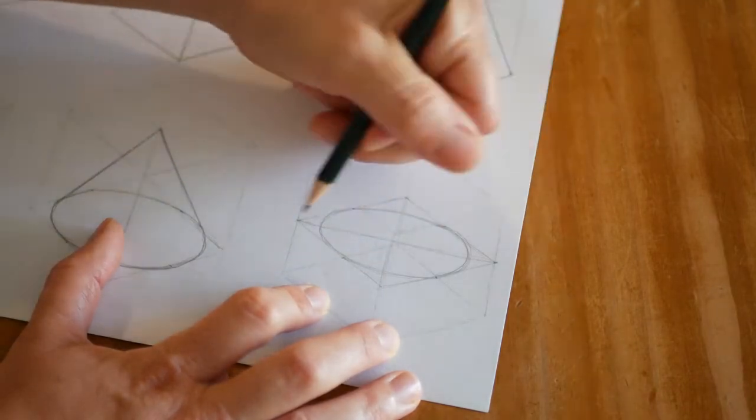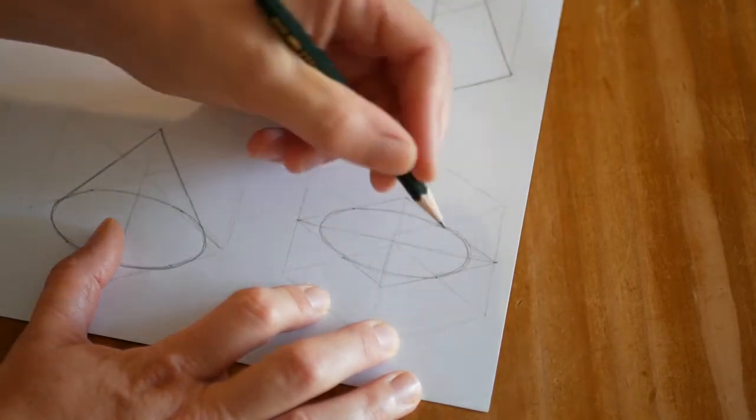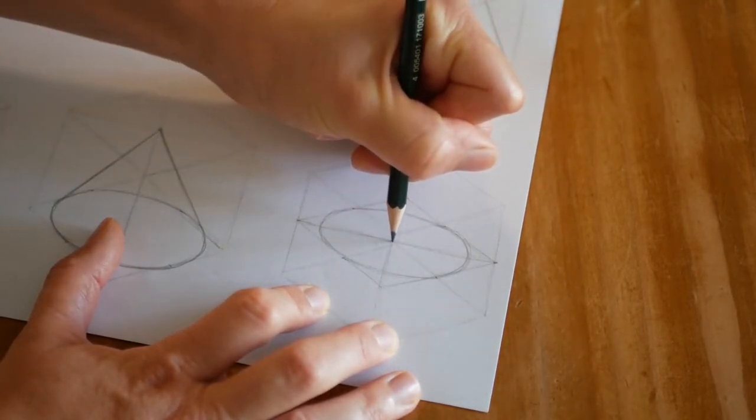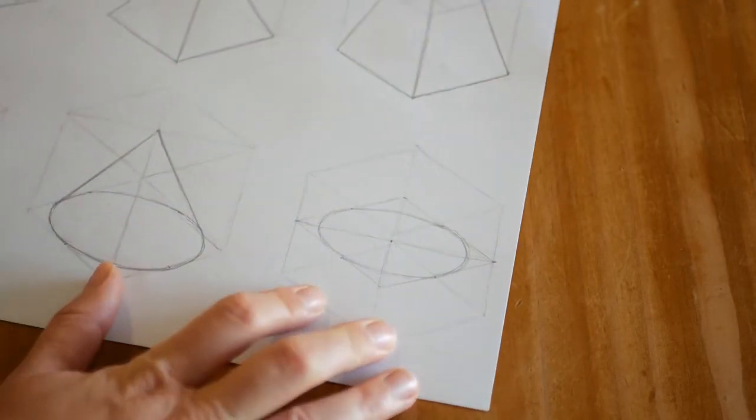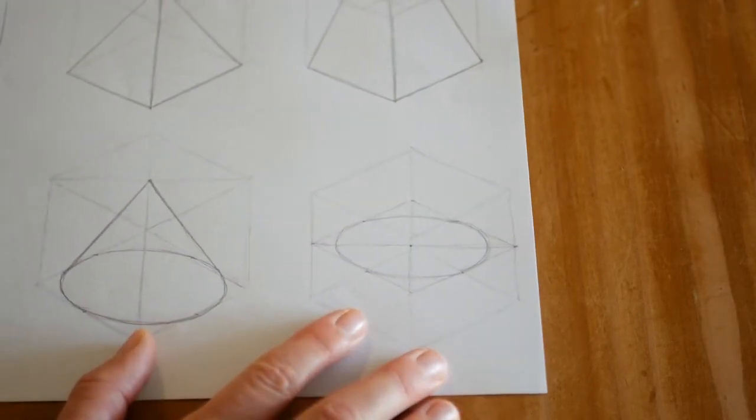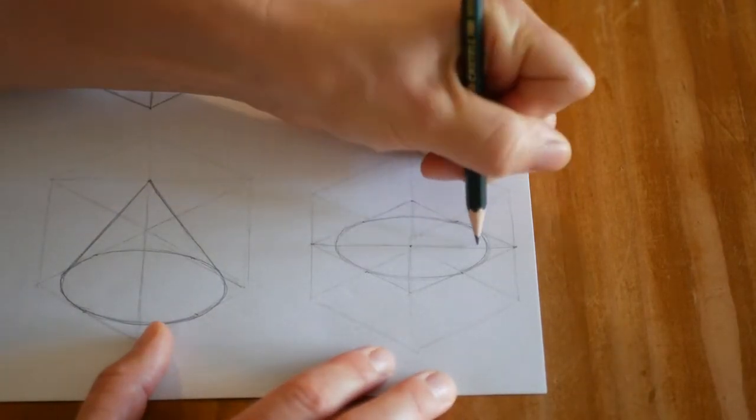This would be our diagonal in real life, and where those cross over, that's the very center of our cube and our ellipse. Now what I want you to do is look at this distance here.